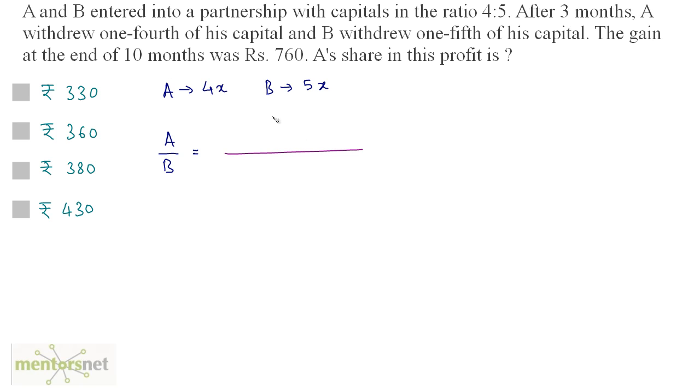What is A's share of investment? Well, it is 4x for the first three months. So we have 4x times 3 plus for the rest of seven months. For the rest of seven months, we have this investment of A minus one-fourth of that because A withdrew one-fourth of his capital after three months. So 4x minus one-fourth of 4x times 7 for the rest of seven months.